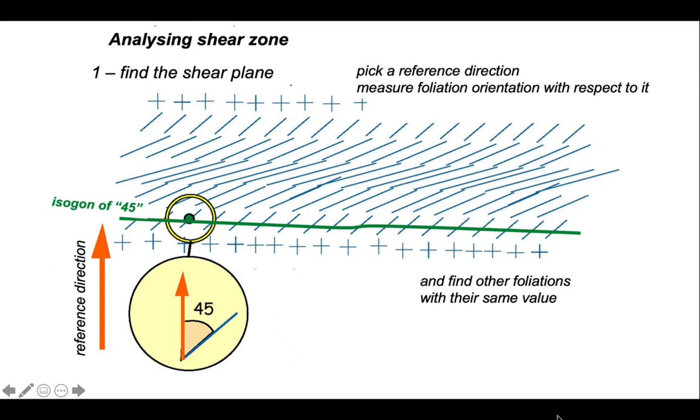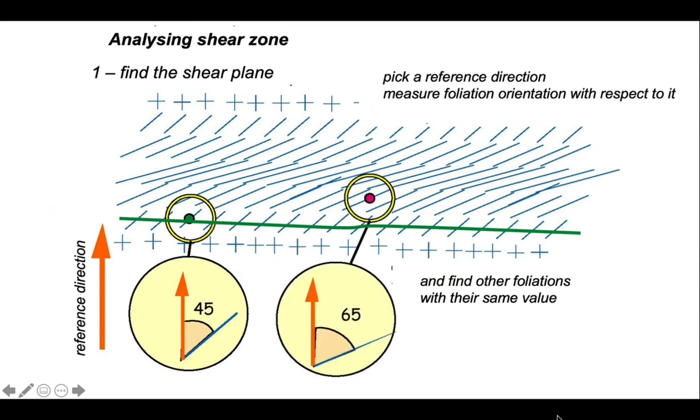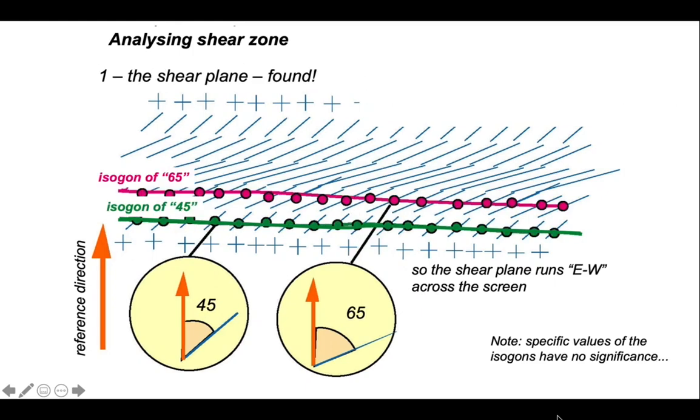Now let's do it again for another orientation of foliation. Let's say here, where the foliation makes an angle of 65 degrees relative to our reference direction. And again, we can draw up the isogon for 65. So here we have two isogons. One of the value 65. One of the value 45.